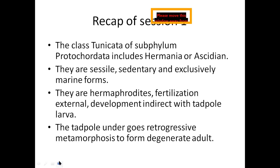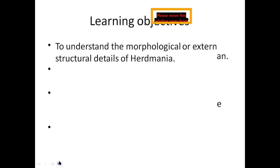One interesting phenomenon seen in ascidians is retrogressive metamorphosis. During larval development into adult, the larva has complex structures which disappear to form a simple sedentary adult. A motile larva degenerates many structures present in it to form a simple adult.